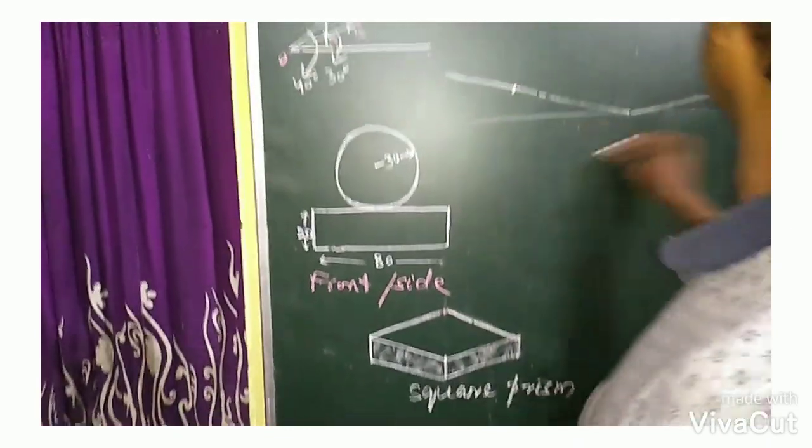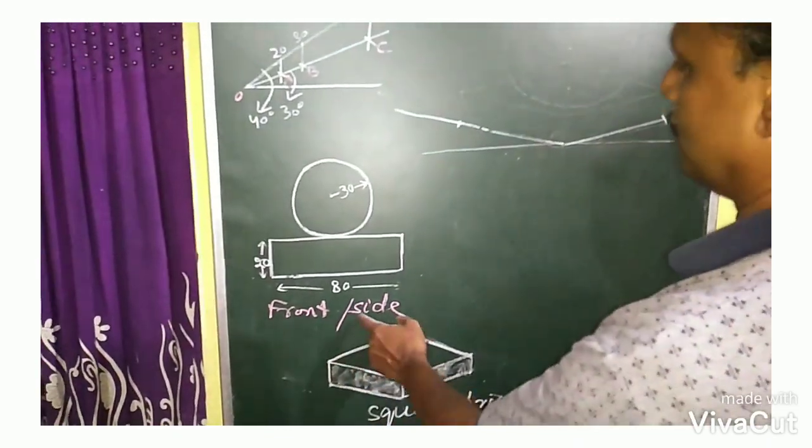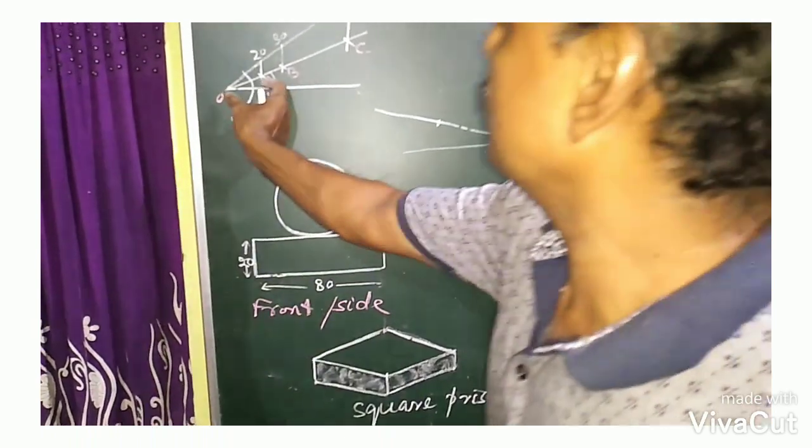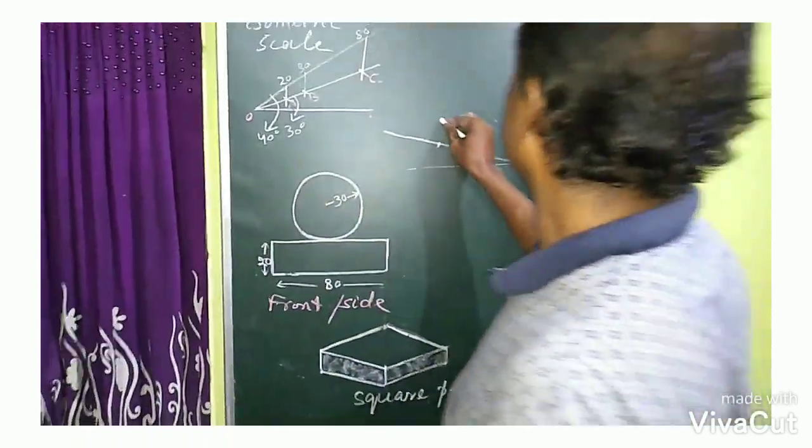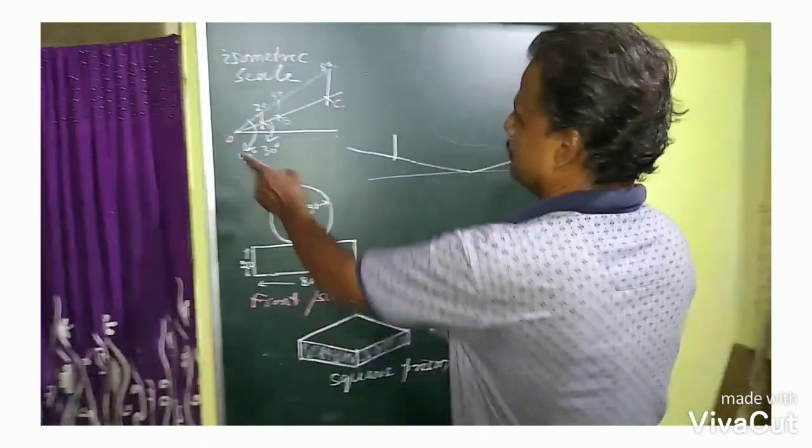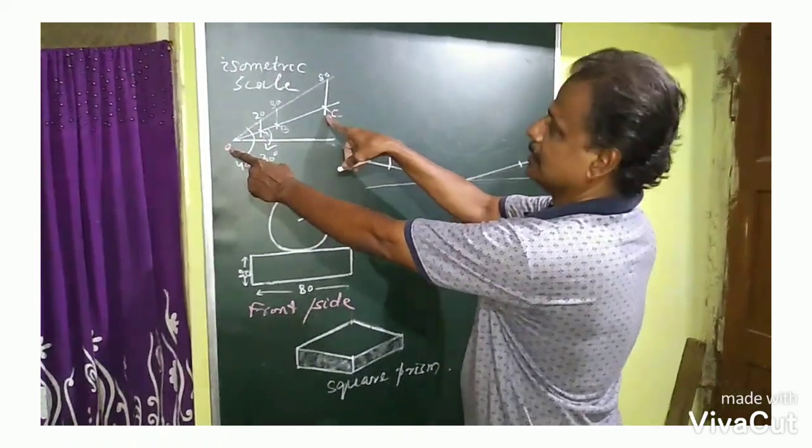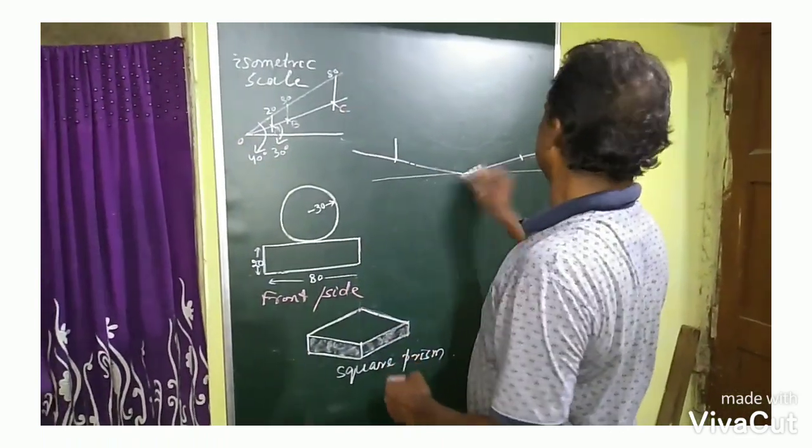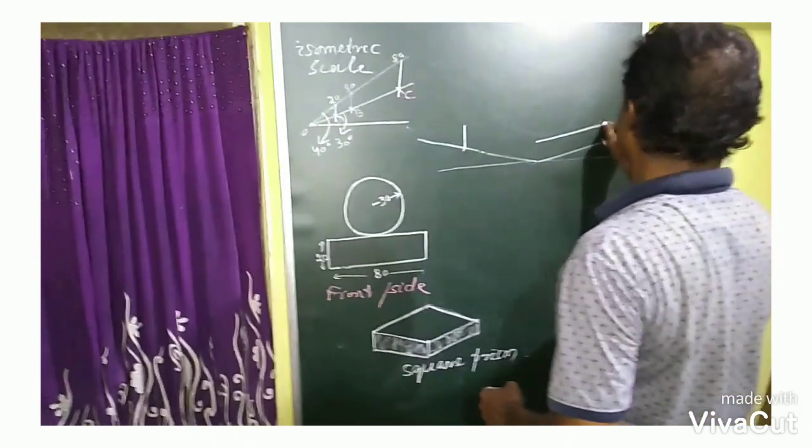The length is 80. The OA distance is 80, and the OC distance. You see OC and OA. Then we will construct.